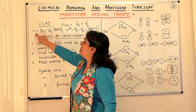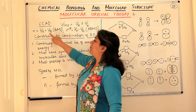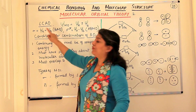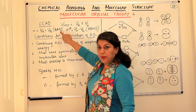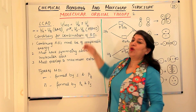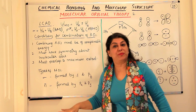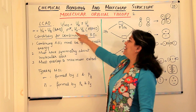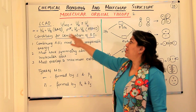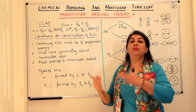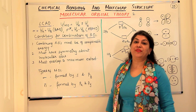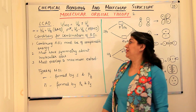So we say the sigma bond formed as a result of addition of the two wave functions is the bonding molecular orbital, and the one formed as a result of subtraction is the anti-bonding molecular orbital, where addition and subtraction mean constructive interference and destructive interference respectively.